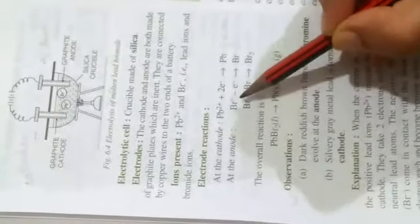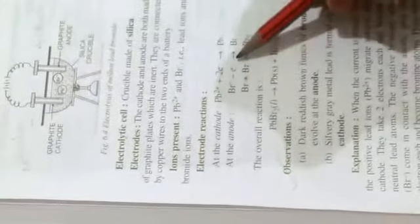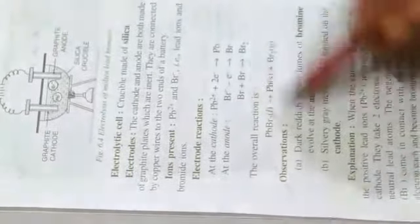At the anode, bromine ion, which is negatively charged, will lose its electron at anode and convert into a bromine atom. Here, bromine gas will collect at anode, like this.